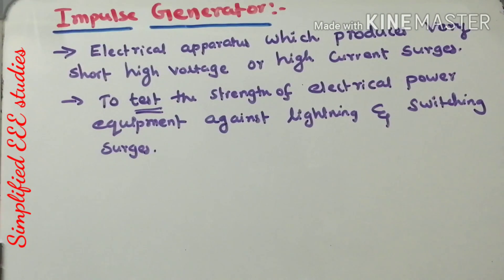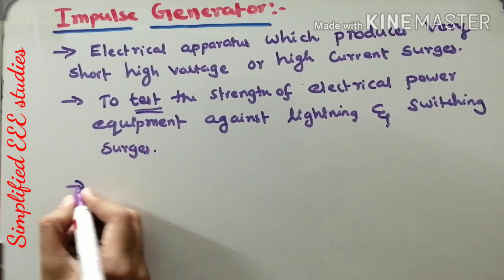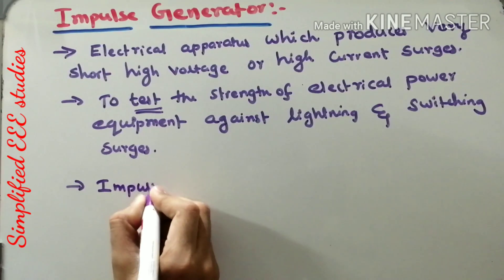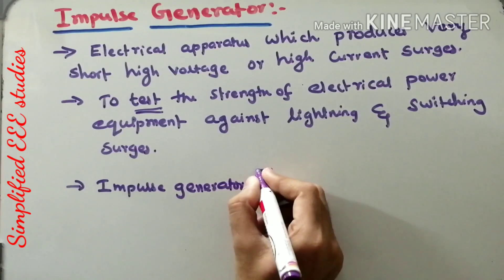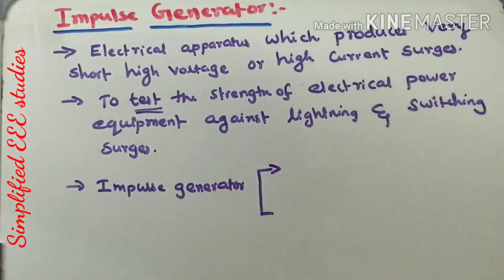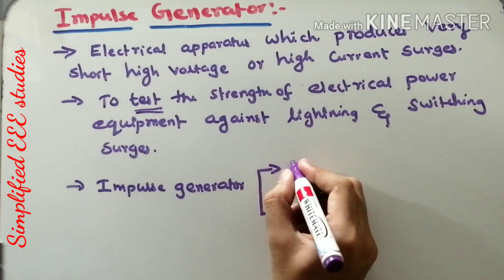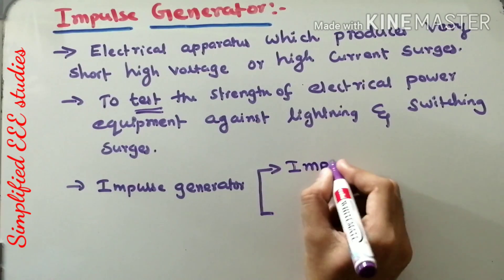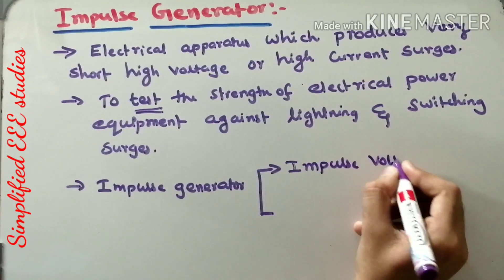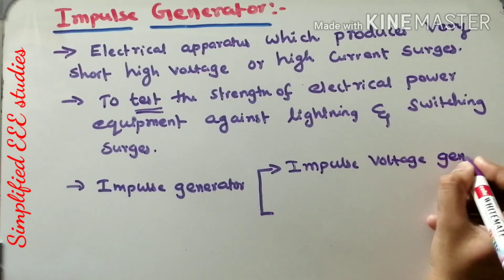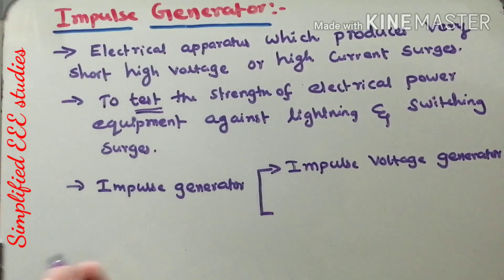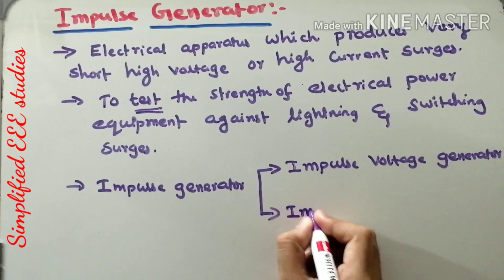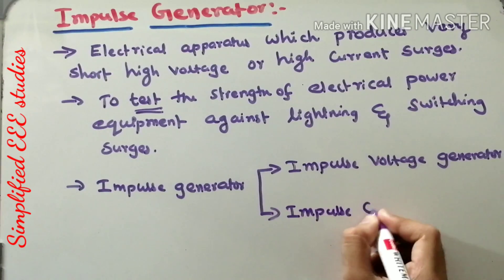Basically, there are two types of impulse generators. If you want to produce impulse voltage, you go for an impulse voltage generator. If your requirement is to produce impulse current surges, then you need to go for an impulse current generator.